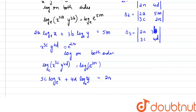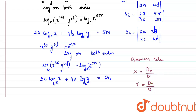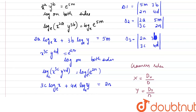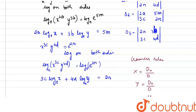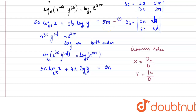Before further solving, let us recall Cramer's Rule. In Cramer's Rule, x = dx/D and y = dy/D, where D is the determinant of the whole coefficient matrix. Applying Cramer's Rule on our system, we have a 2×2 matrix with variables log x and log y, and constants m and n.